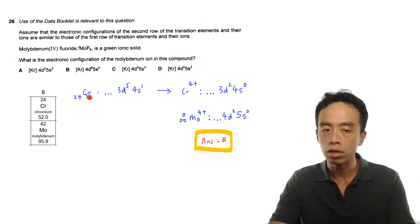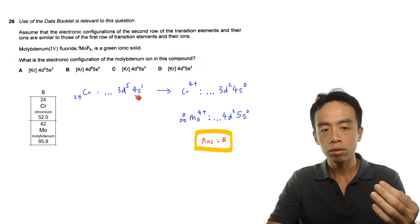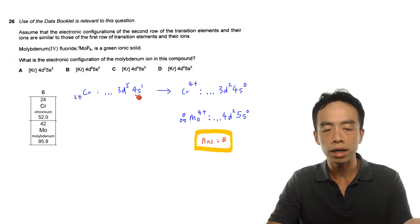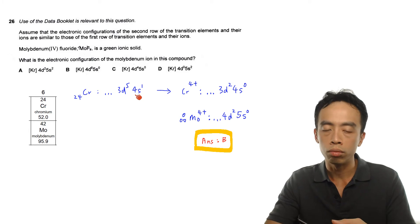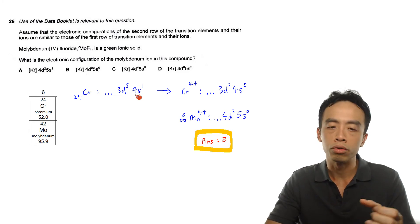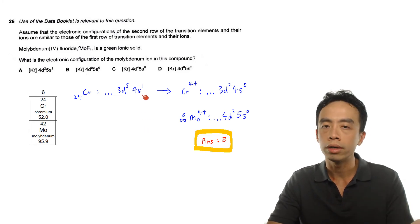we'll just assume that you know how to write out the electronic configuration for chromium. So the electronic configuration for chromium 24 should be 3d5 4s1. If we just focus on the valence shell, then when I want to form Cr4+, basically I remove 4 electrons from chromium. Removing electrons, I will remove electrons from the 4s subshell first.